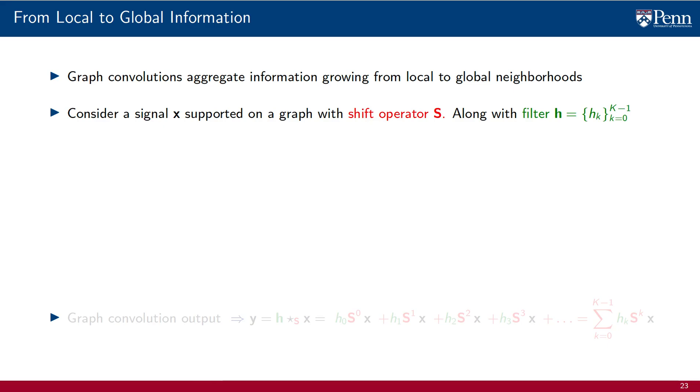To revisit this important point, consider a graph signal x supported on a graph with shift operator S, along with a filter h with coefficients h_k. The filter contains K taps from 0 to K-1. For this given signal graph and filter, we undertake the computation of the output of the convolution of h with x on the graph S.